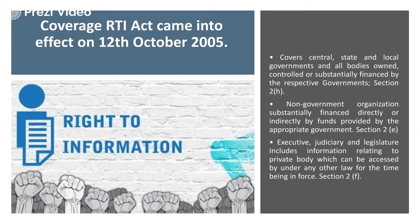The RTI Act came into effect on 12th October 2005 — you should always remember dates when studying acts. It covered all central, state, and local governments and all bodies owned, government-controlled, or financed by governments, as well as non-government organizations substantially financed directly or indirectly by the appropriate government. It also covers the executive, judiciary, and legislature, and includes information relating to private bodies which can be accessed under any other laws in force.